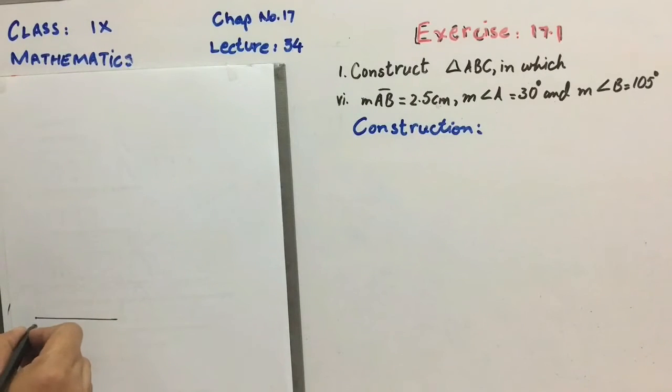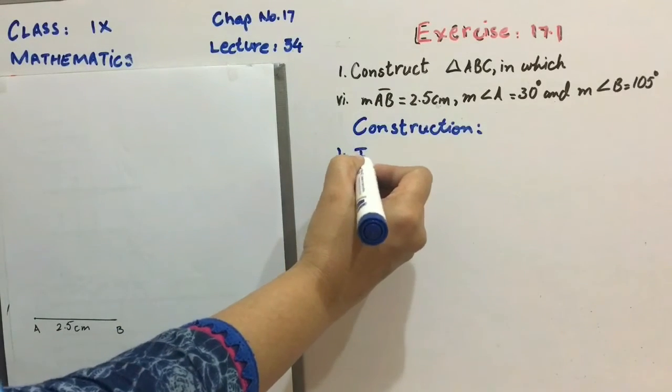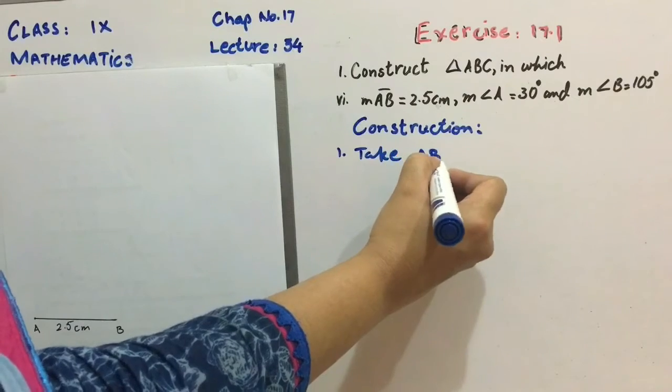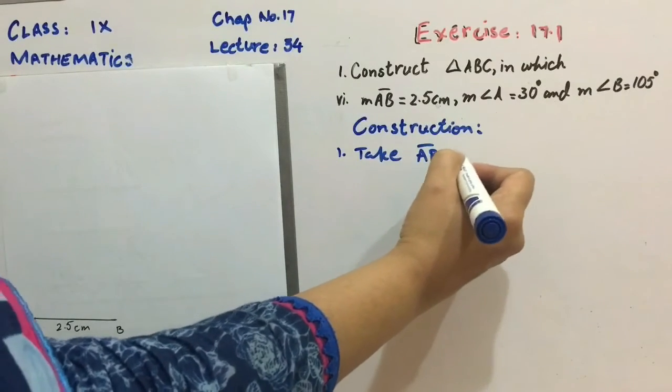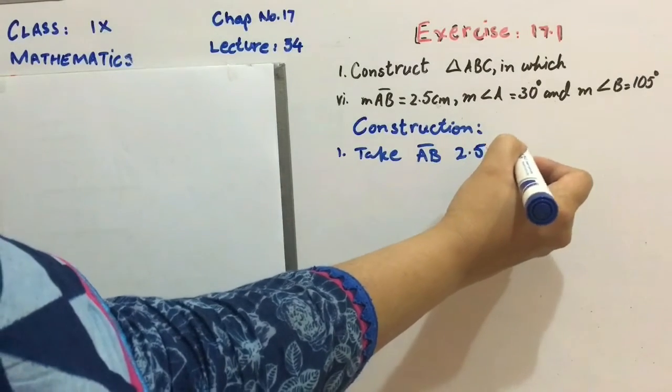Note here A, B, 2.5 cm. Now note this step as Step 1. Take line segment AB, symbolically we would write here AB is equal to line segment AB 2.5 cm long.